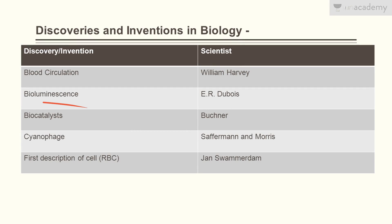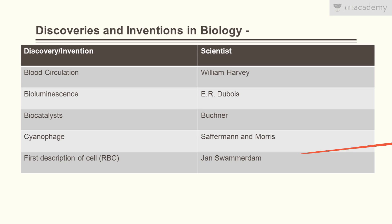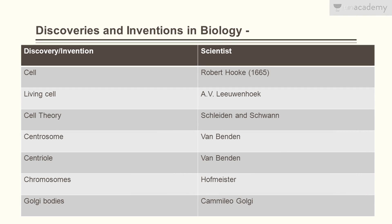Bioluminescence was discovered by E.R. Dubois. Biocatalysts were discovered by Buchner. Cyanophase was discovered by Safferman and Morris. The first description of a cell — that of the RBC — was given by Jan Swammerdam.